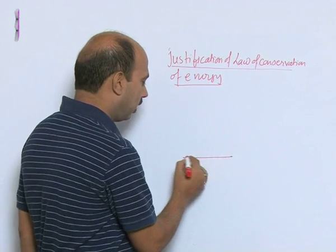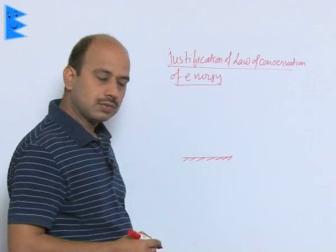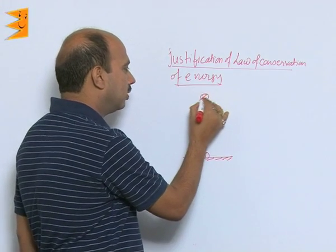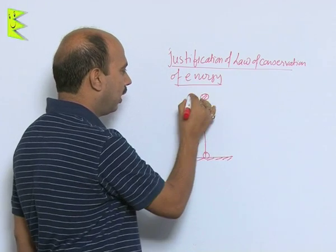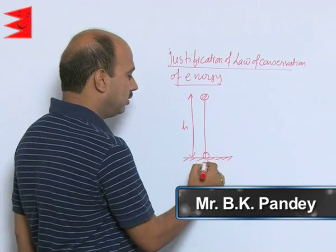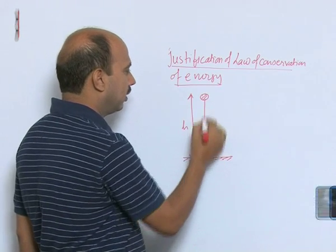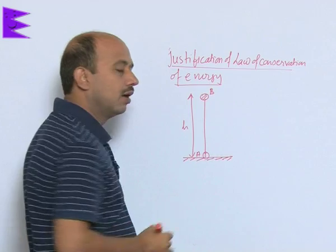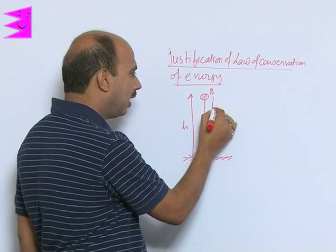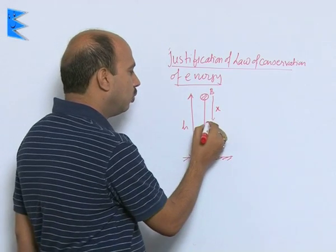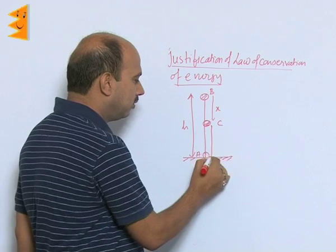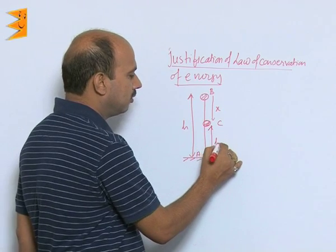Suppose this is the ground here. A ball is raised from here to here. The total height is h. We can take the initial position as A, and this is B. When the ball comes down by a certain height x, we can take this position as C. This height is h minus x.